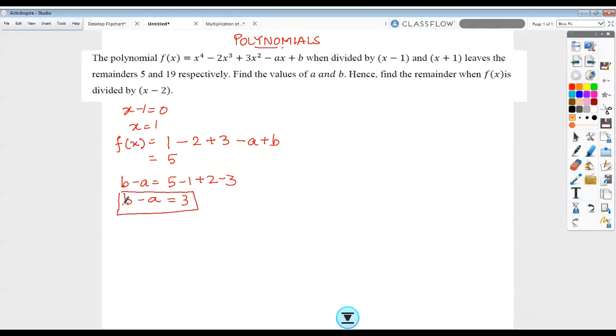Now let's get the second equation. We take the second divisor as (x + 1). In this case, the zero would be x as minus 1. I'll put this minus 1 in my given polynomial. (-1)^4 would be positive 1, minus 2(-1)^3 plus 3(-1)^2 minus a(-1) plus b. On simplifying this, I'll get 1 plus 2 plus 3 plus a plus b, and this remainder is given to me as 19 in the question. On simplifying this equation, I'll get b plus a equals 13.